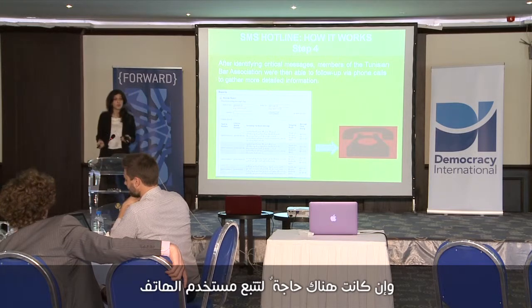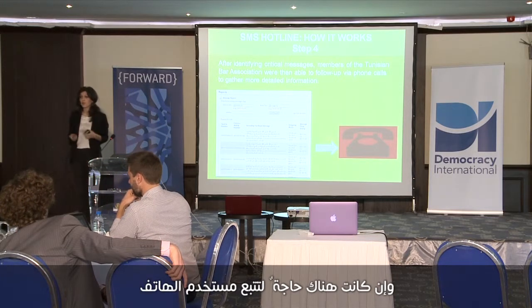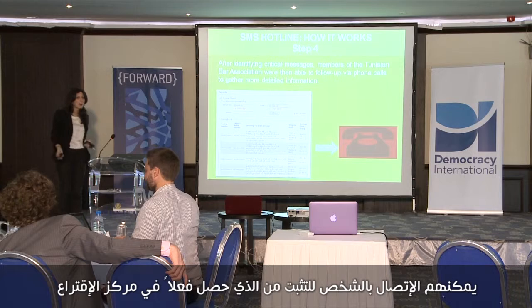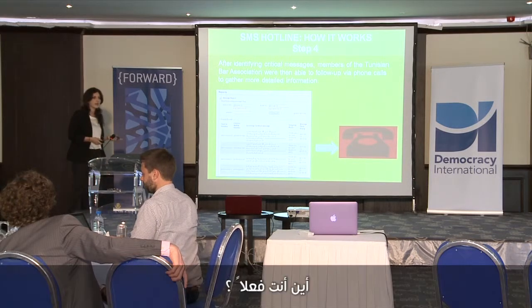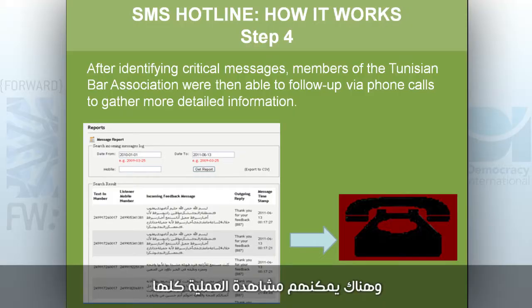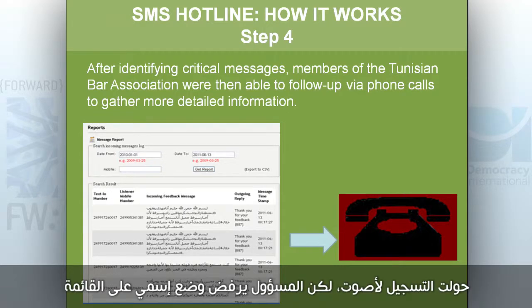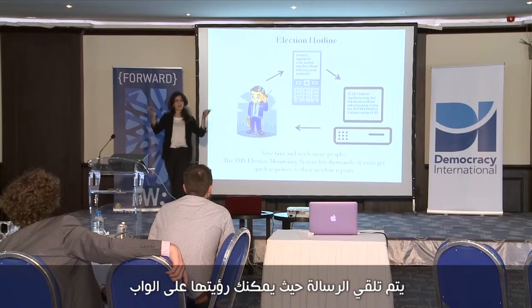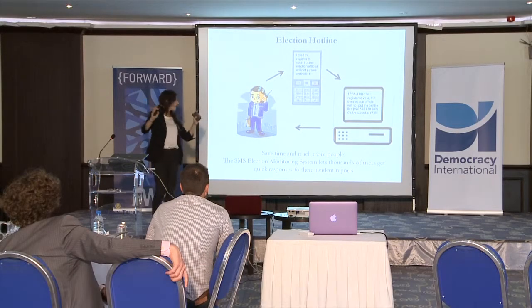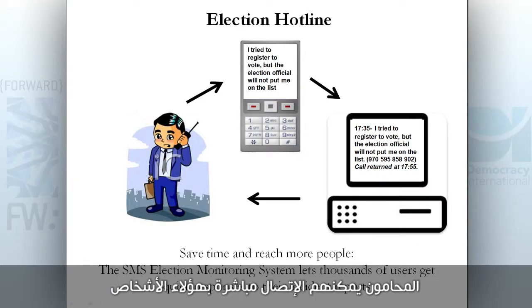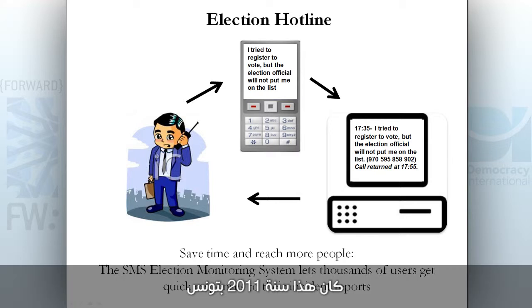In the instance where they do need to follow up with the mobile user, they can do that — they can call the person to get more information about what exactly happened at the polling station and where. So you have a person who texts in, 'I tried to register to vote but the election official will not put me on the list.' That message is received, you can view it in the web platform, and if the need arises, lawyers can reach out directly to those people. That was Tunisia in 2011.